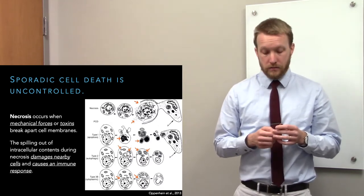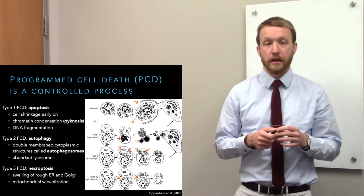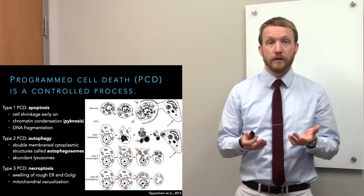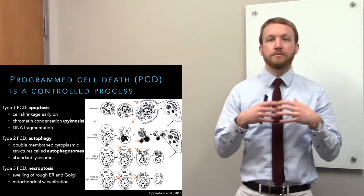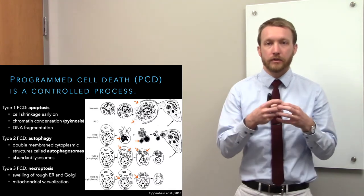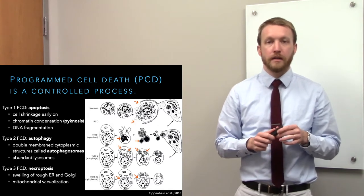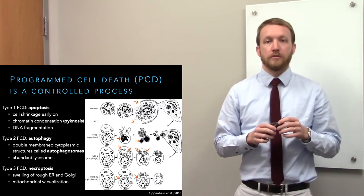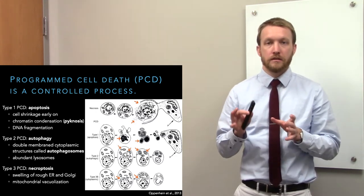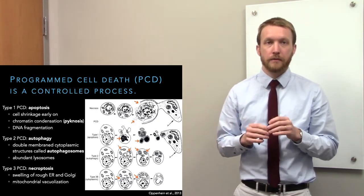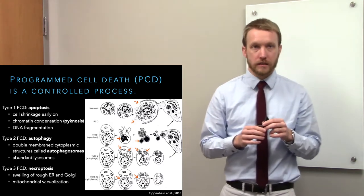We don't see an inflammatory response with programmed cell death because it's a controlled way for cells to kill themselves. They do it in a very orderly fashion, and rather than spilling out their intracellular contents, they break off little tiny bits of themselves that are easily digestible by nearby macrophages. We don't need an inflammatory response; we don't stimulate pain-sensitive nerve fibers. No pain — so it's a painless way to remove excess cells.